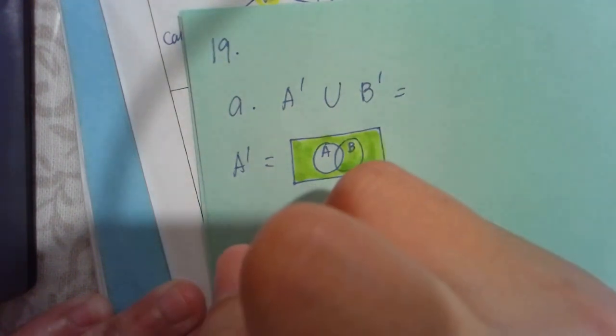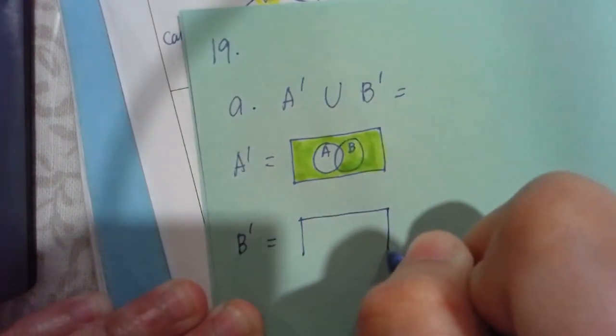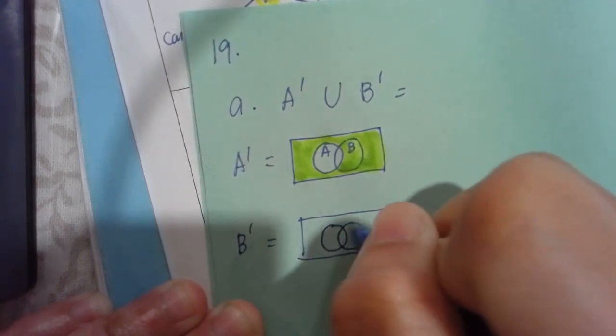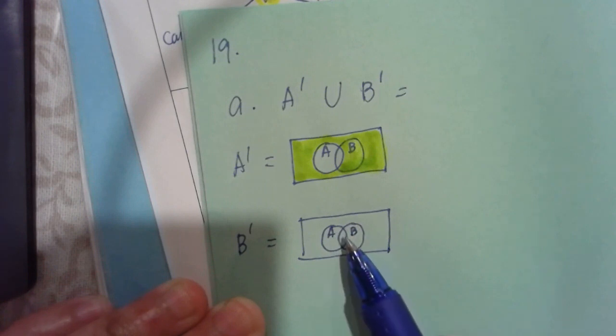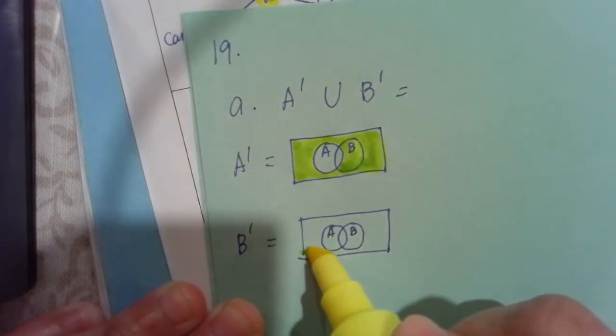And then we're going to do B prime. See, it seems like you are also doing an operations, but this is through shading.